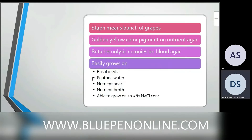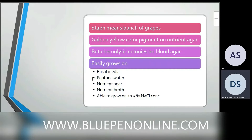On nutrient agar, staph aureus forms golden yellow pigmented colonies resembling a bunch of grapes. On blood agar it shows beta hemolytic colonies. Staph aureus easily grows on basal media such as peptone water, nutrient agar, and nutrient broth. It is also able to grow at 10.5% sodium chloride concentration.